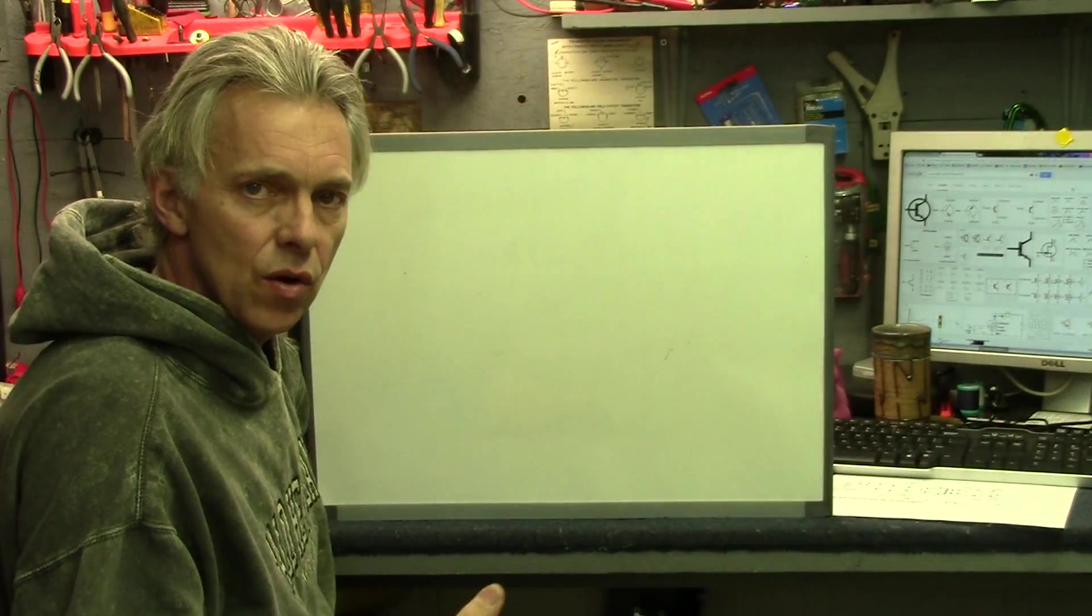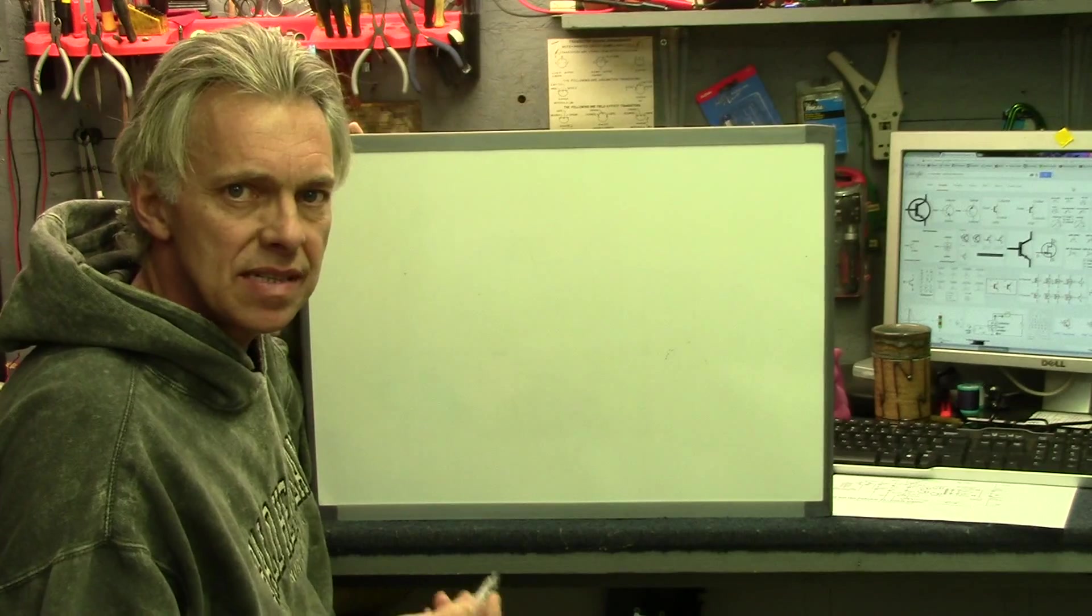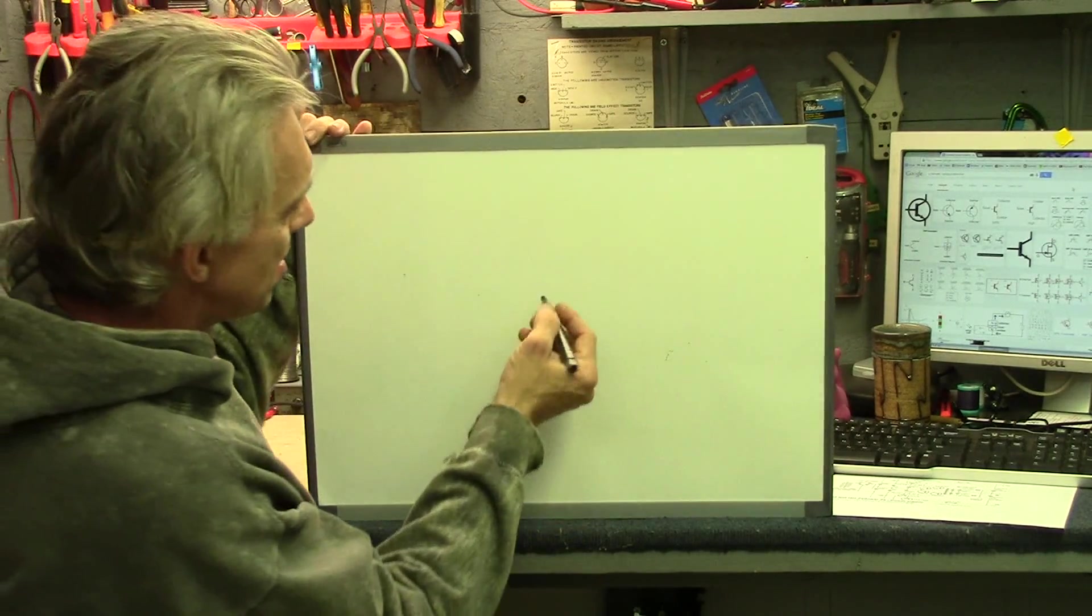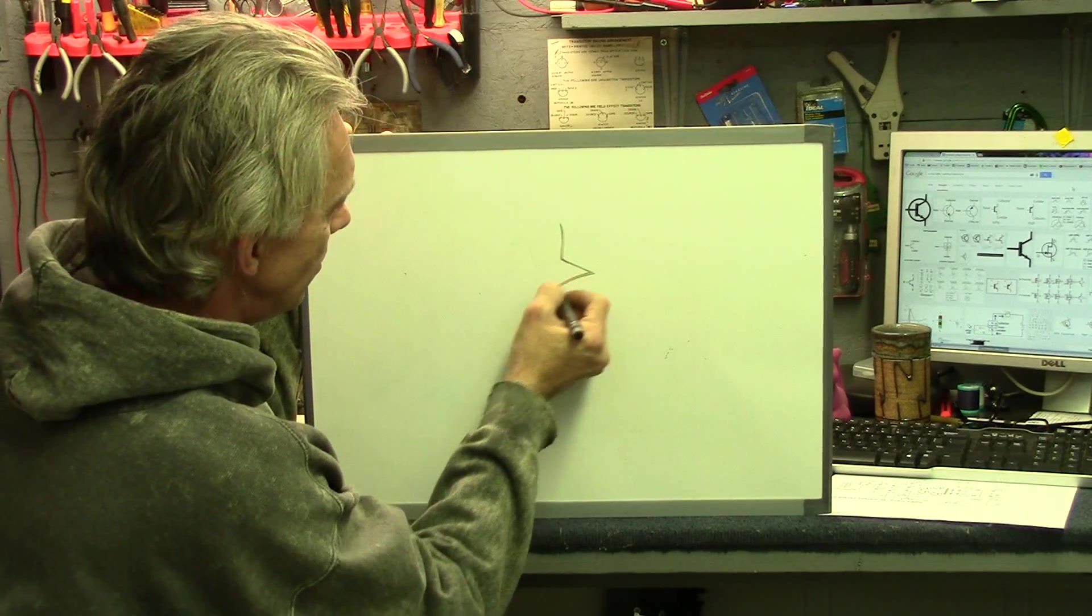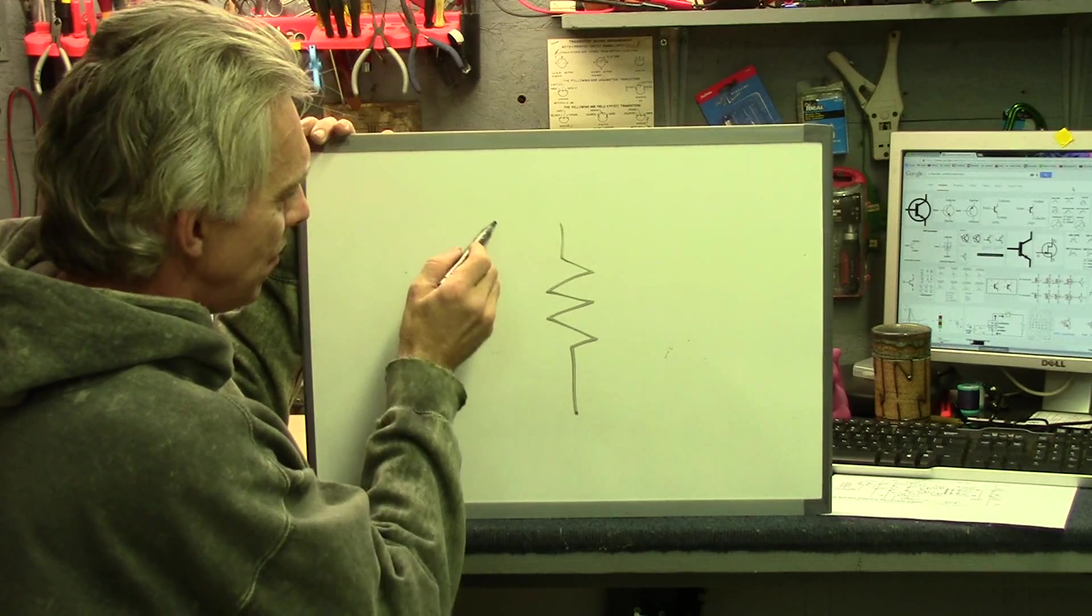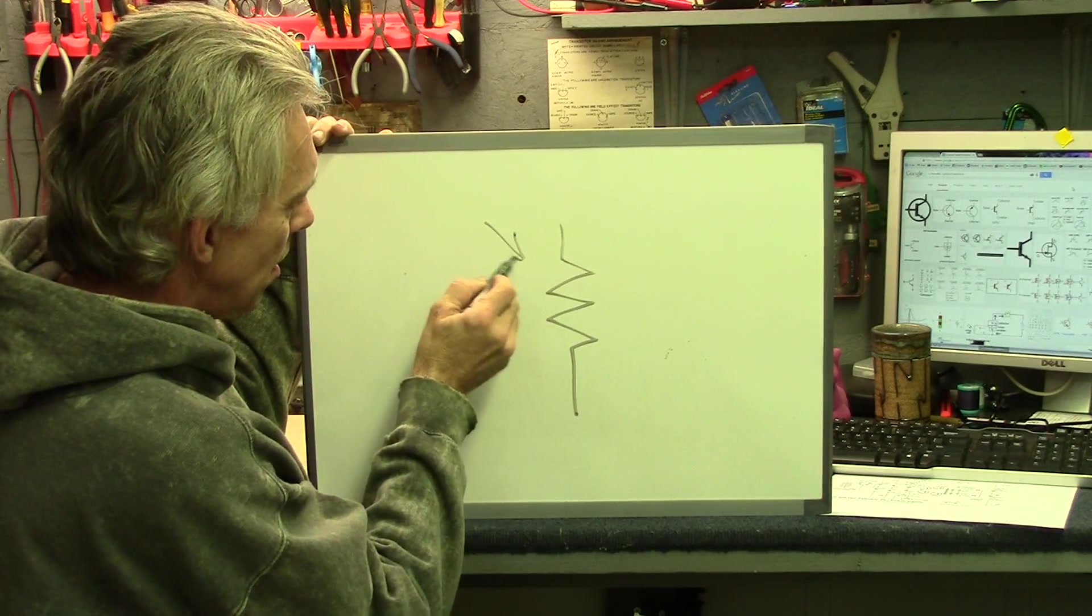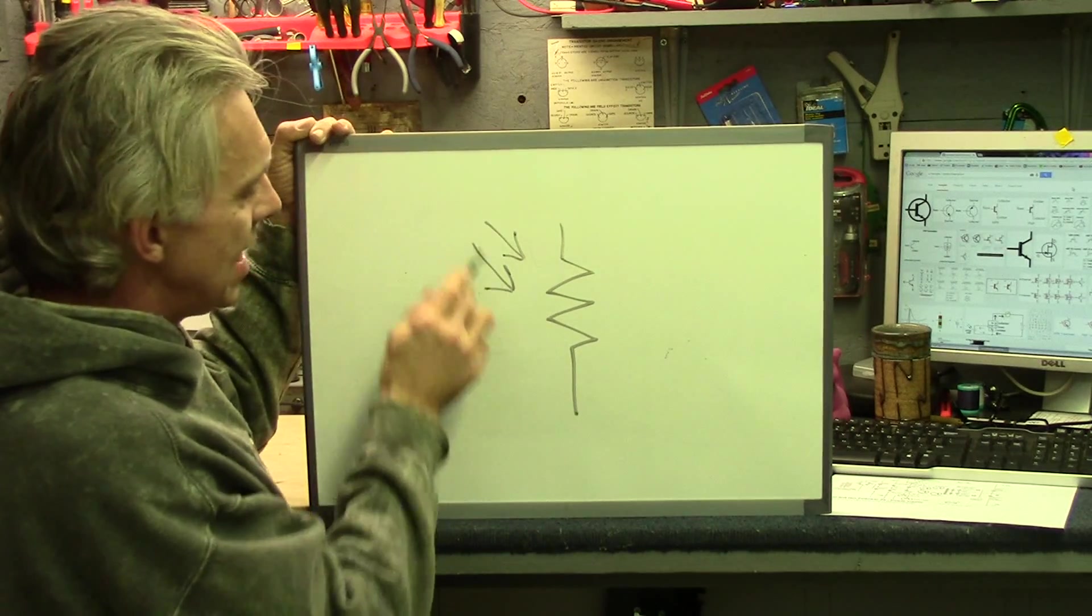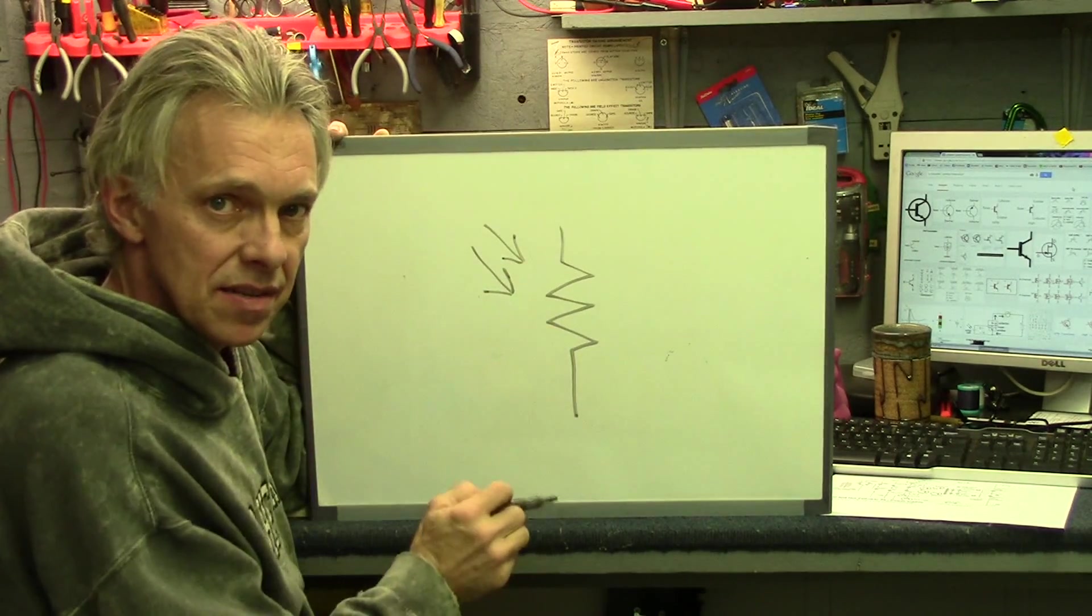A photo cell or a light dependent resistor, also abbreviated LDR, will have the resistor symbol. We'll draw it a different way this time. And it will have two arrows pointing at it at an angle, indicating that light will change the resistance of this.